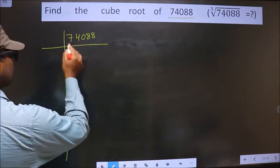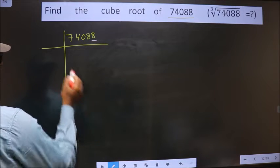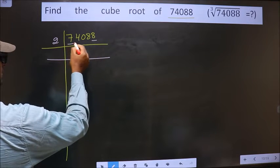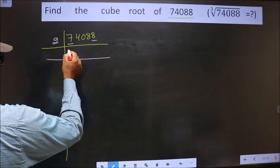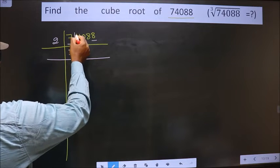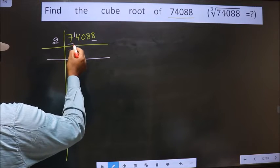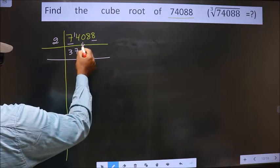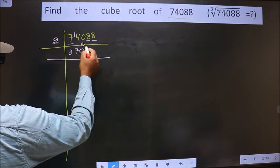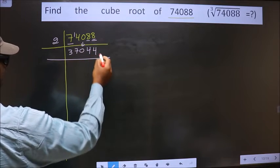The last digit of 74088 is 8, which is even, so we take 2 here. The first number is 7; the closest number to 7 in the 2-times table is 2×3=6. 7 minus 6 is 1, carried forward making it 14. 2×7 is 14. Bring 0 down. Next is 8; 2×4 is 8. Again 8, so 2×4 is 8.